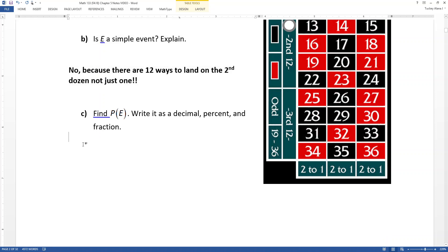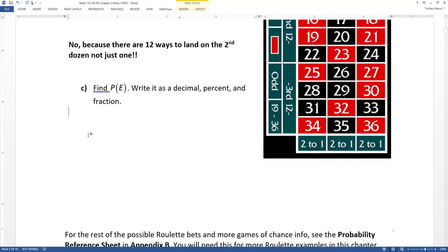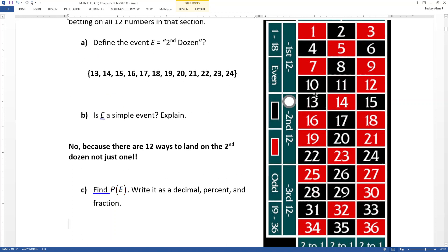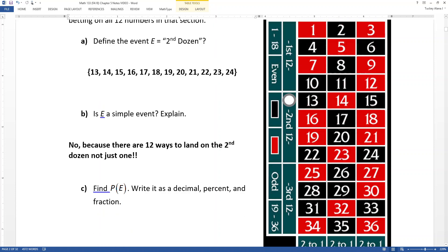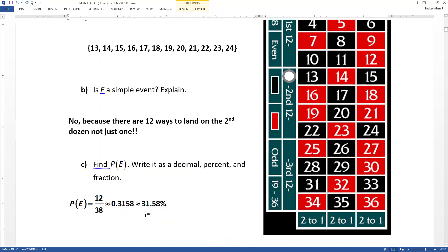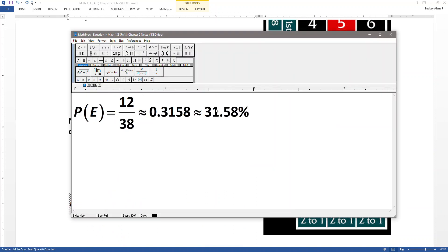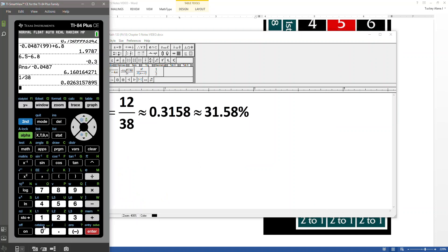So we're going to find the probability of E. Well, we already know what that means in words, so they just want us to find the number. If they want it in words, they'd say in the context or something like that. So they just want that number. And now let's think. There's 12 numbers in the second dozen, and there's 38 numbers total. So the probability of E is 12 out of 38, which is 0.3158 or 31.58% because that's what 12 divided by 38 is.